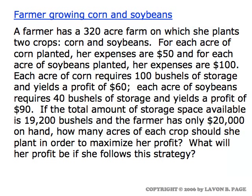Here's a typical example of a linear programming problem. In this instance, we have a farmer who's growing two crops, corn and soybeans, on a 320-acre farm. We have some data about the expenses of planting corn and soybeans, storage space costs, the amount of storage available, and the amount of capital available. The bottom line is how many acres should be planted in each crop in order to maximize the profit. You're trying to come up with a strategy which will maximize or minimize something. That's the general scenario for a linear programming problem.